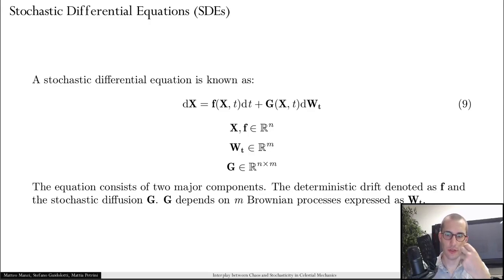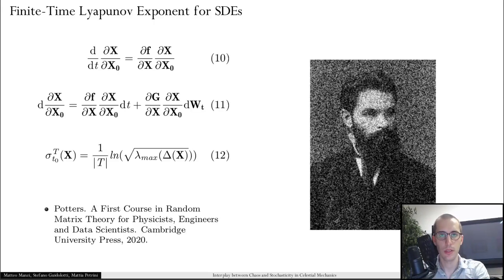Now, what we introduce in this work is actually a stochastic generalization of this indicator. So we won't go in detail here about the definition of stochastic calculus, but it's enough to say that the differential of the state, so the evolution of the state, is given by the deterministic component, represented by F, and then a stochastic one, which is encoded into the structure of the G matrix. And, of course, also the statistics of the process multiplying G.